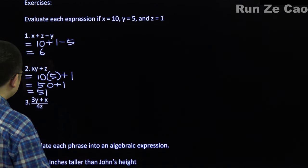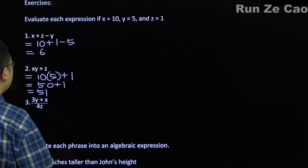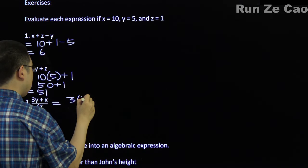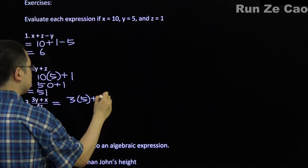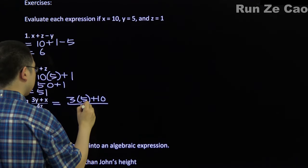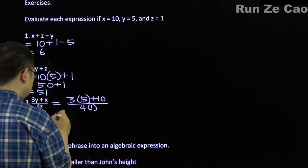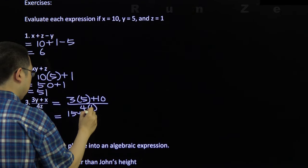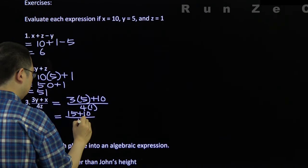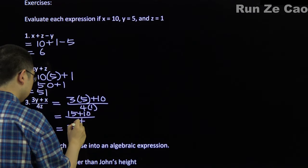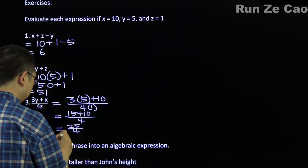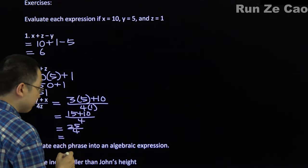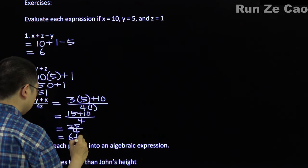What about (3y + x) over 4z? We substitute in: 3 × 5 = 15, plus x which is 10, over 4 × 1 = 4. So (15 + 10) / 4 = 25/4. If you don't want an improper fraction, that's 6 and one-quarter as a mixed fraction.